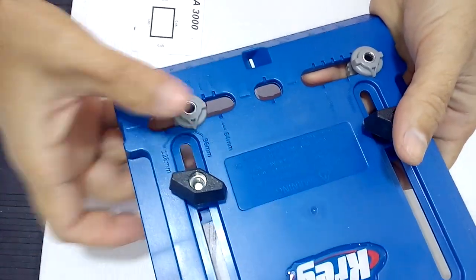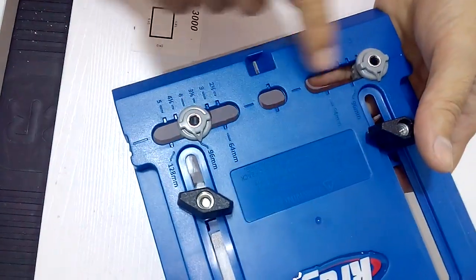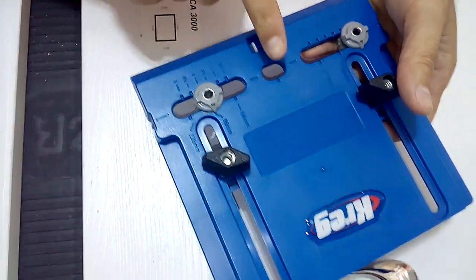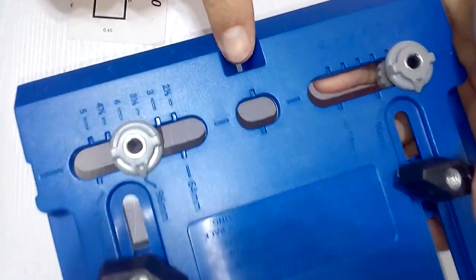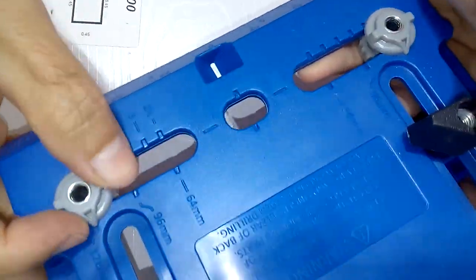When making this change we have to do it on both sides because the position of our jig will always be established considering the center of the handle that we will place on the door.